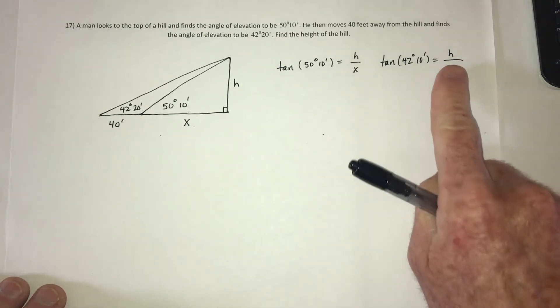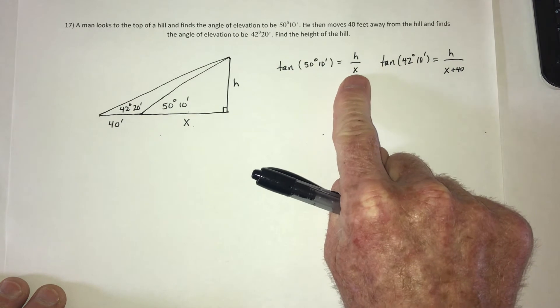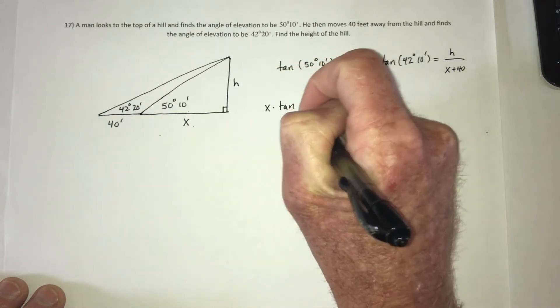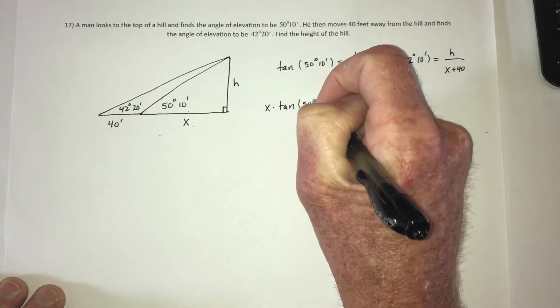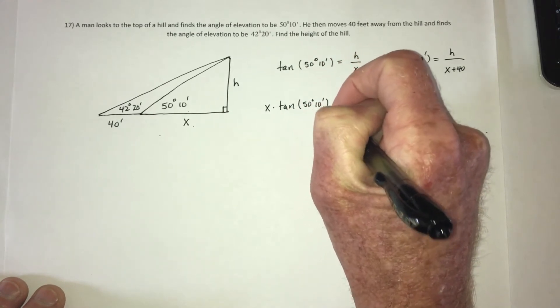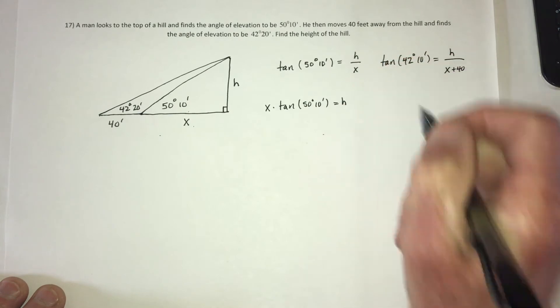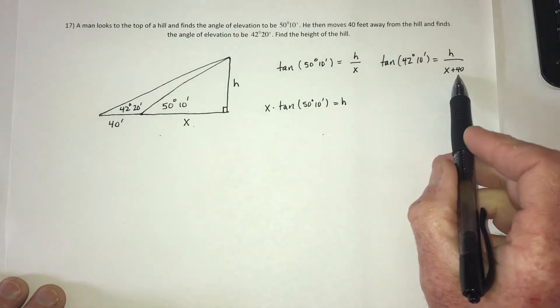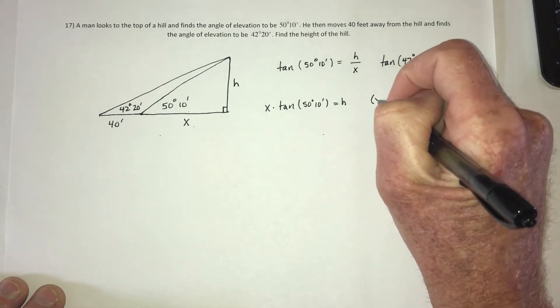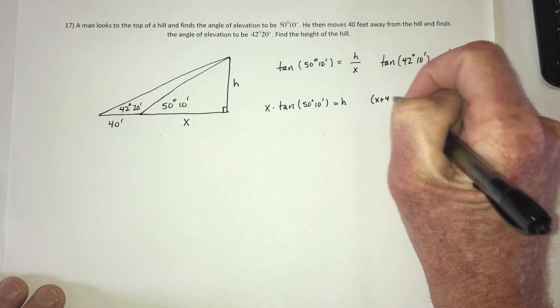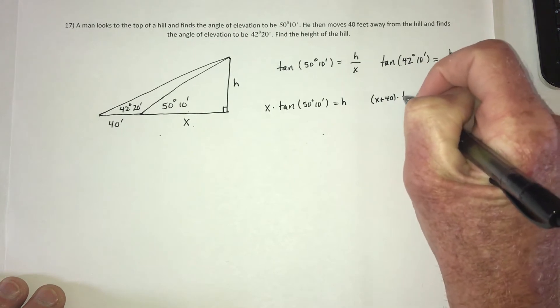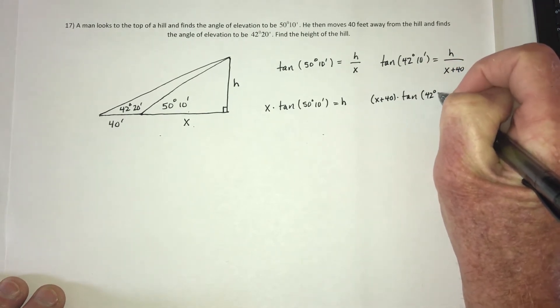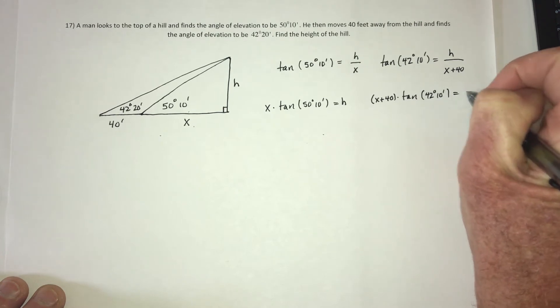Now they both have an h, so what I could do is, on this one, multiply both sides by x. So x times the tangent of 50 degrees, 10 minutes, equals h. On this one over here, multiply both sides by x plus 40. So I'm going to put it in parentheses. x plus 40 times tangent of 42 degrees, 10 minutes, equals h.